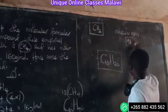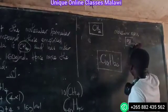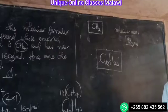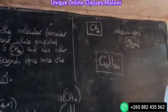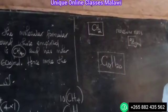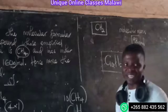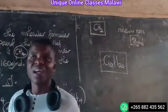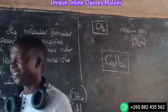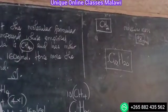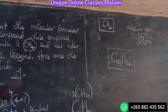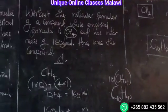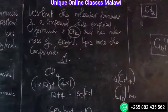The molar mass is 80 grams. Let's try this formula: the empirical formula is CH2 and the molar mass is 80 grams. Now work out the molecular formula using the same steps we have followed. Good luck.